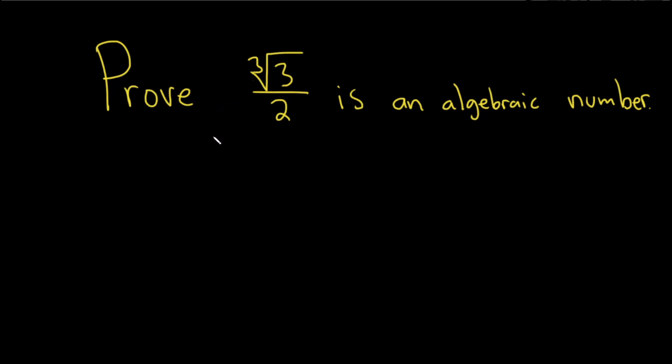In this problem, we're going to prove that the cube root of 3 over 2 is an algebraic number. A number is algebraic if it is a solution to a polynomial equation with integer coefficients.